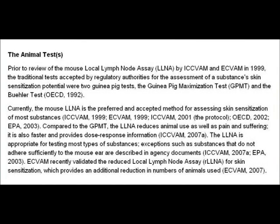Prior to review of the mouse local lymph node assay by the ICCVAM — the Interagency Coordination Committee on the Validation of Alternative Methods, which is the US equivalent of ECVAM, the European Centre for the Validation of Alternative Methods — in 1999, the traditional tests accepted by regulatory authorities for the assessment of a substance's skin sensitisation potential were two guinea pig tests: the guinea pig maximisation test and the Buehler test.